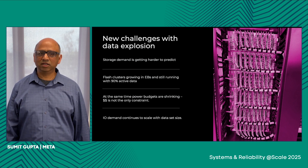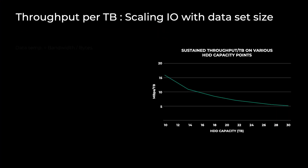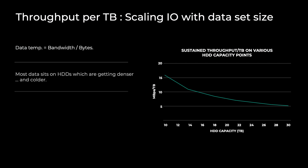To better understand IO demand, we define a metric called data temperature, which is a ratio of bandwidth to bytes — basically how much bandwidth a service consumes and how much capacity a service consumes. Most of our data today is on HDDs, and HDDs are actually getting denser but they are not providing more throughput. The graph shows that data temperature is dropping: when we had 10 terabyte HDDs, we were getting about 15 megabytes per second per terabyte, but as we go towards 30 terabyte HDDs, we are now only getting about 5 megabytes per second per terabyte.